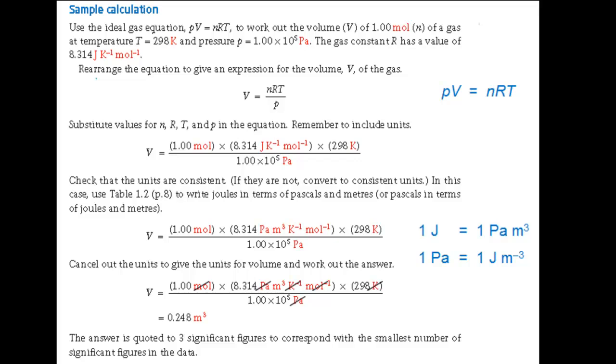Here's a sample calculation which uses the ideal gas equation PV equals nRT. Don't worry if you haven't met this before, all the information you need is here. You are asked to work out the volume V of a gas and are given values for P its pressure, n the amount in moles, R the gas constant and T the temperature, all in SI units.